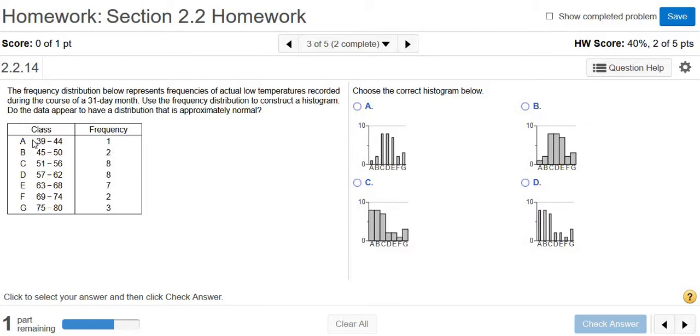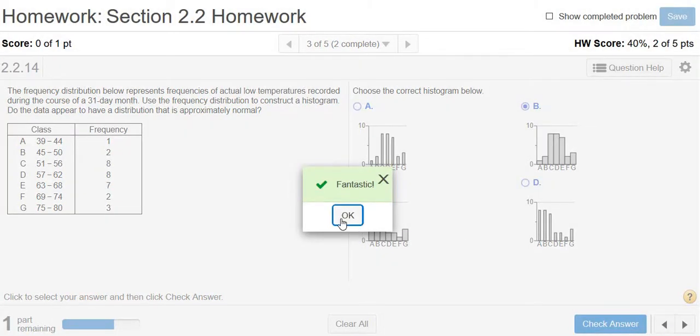Now, it looks like the frequency of the first class is 1. So there's no way it's going to be C. So it has to be choice B. So let's click check answer. There it is. Fantastic.